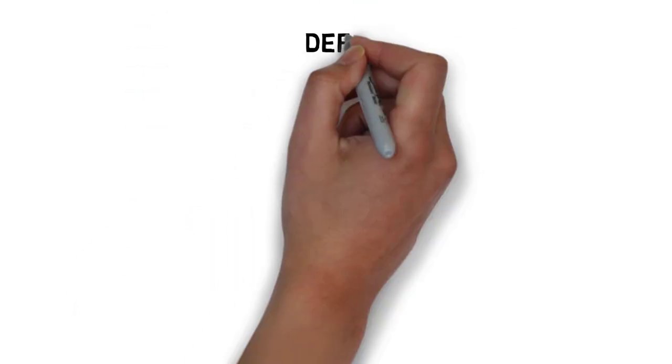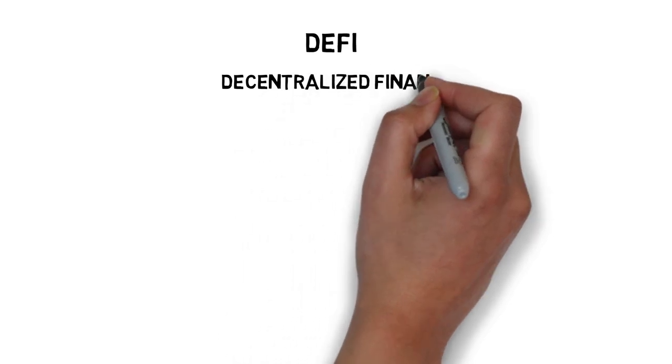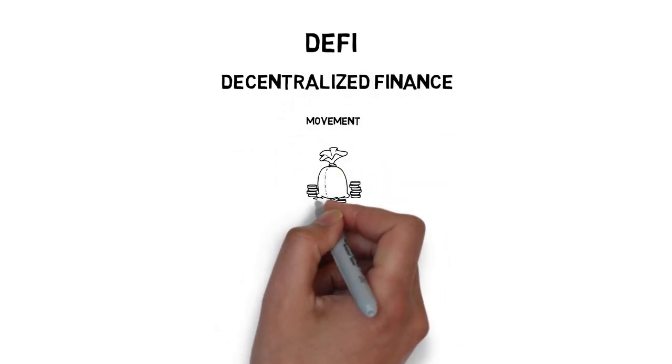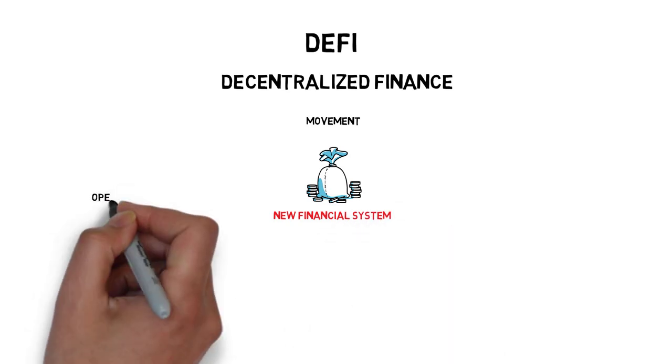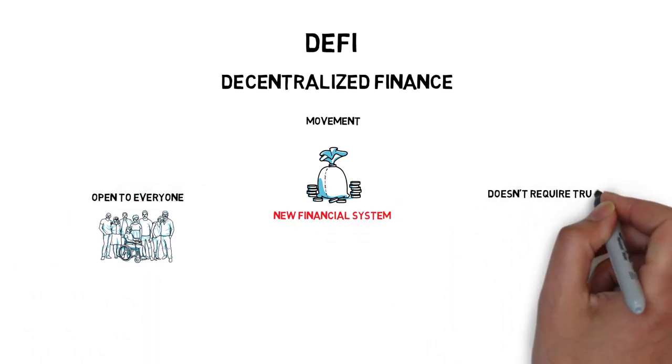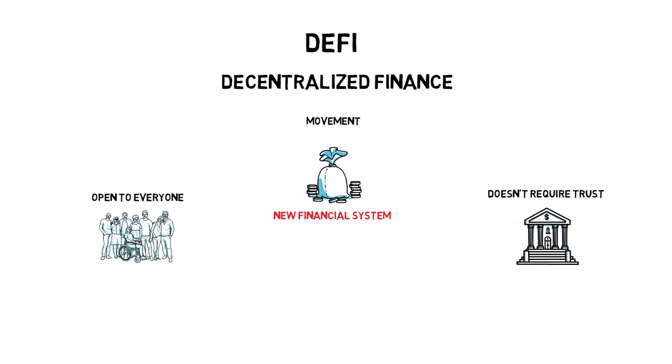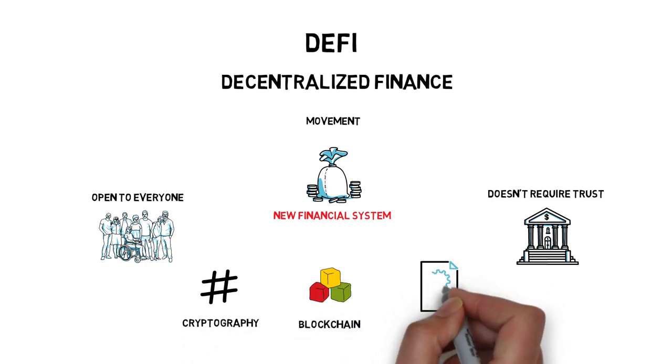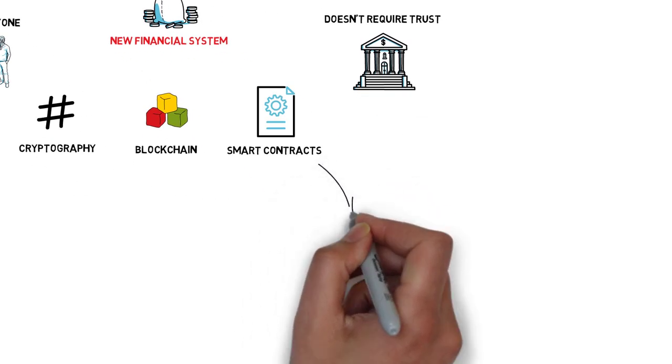DeFi or decentralized finance is a movement that aims at making a new financial system that is open to everyone and doesn't require trusting intermediaries like banks. To achieve that, DeFi relies heavily on cryptography, blockchain, and smart contracts. Smart contracts are the main building blocks of DeFi.